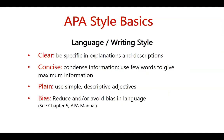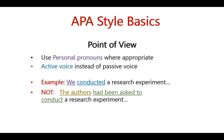APA style basics for language are that you be clear and specific in your descriptions and explanations, concise — using the fewest words possible to give the best information — and plain, using simple descriptive adjectives without being too flowery. There is an entire chapter on reducing or avoiding bias as you write, which aligns with growing emphasis on diversity, equity, and inclusion. For point of view, you're advised to use personal pronouns where appropriate and use active voice rather than passive. For example, active voice would be 'we conducted a research experiment,' whereas passive would be 'the authors had been asked to conduct a research experiment.'